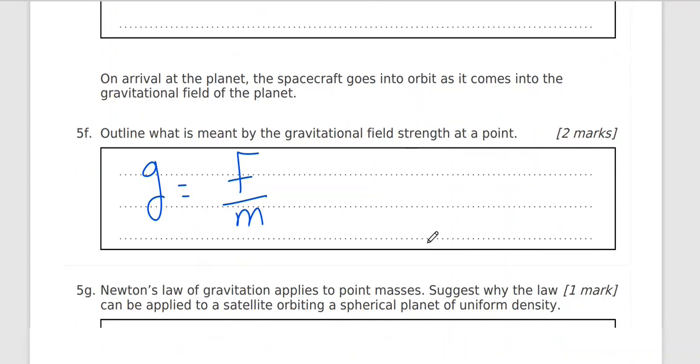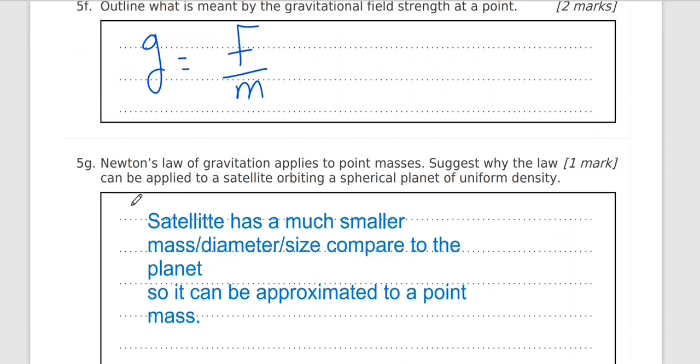Newton's law of gravitation applies to point masses. Suggest why the law can be applied to a satellite orbiting a spherical planet. Satellite is, the size of the satellite is really really small compared to the size of a planet so we can consider it, we can approximate it to a point mass. We can use Newton's law of gravitation which force equals gravitational constant times small mass times the capital mass divided by the distance between them squared. So this we can use it if we have point mass, the mass or the size is really small.